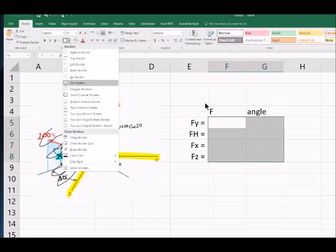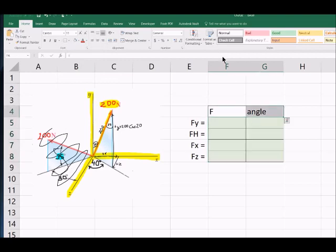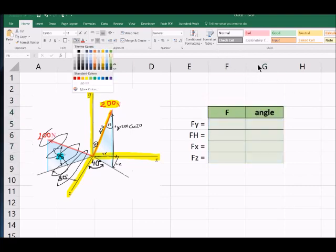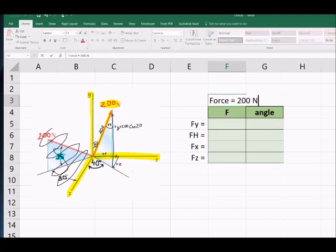So I've got one column for my forces, one column. This is going to be the angle between the vector and each of the coordinate systems. Formatting it here underneath the Home tab, I like to create my own tables rather than use the ones that Excel gives you.